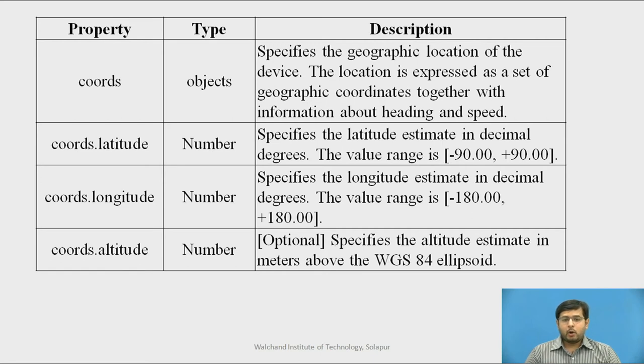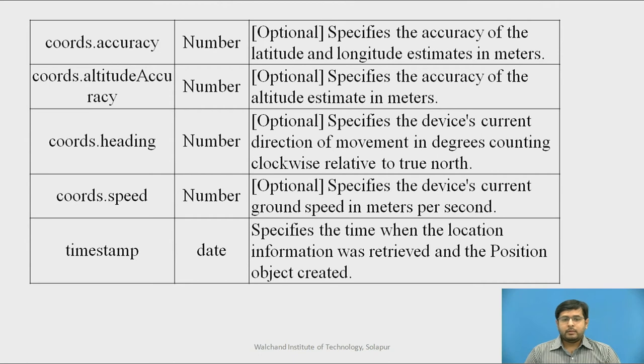We have coords altitude. This is optional. It specifies the altitude estimate in meters above the WGS 84 ellipsoid. Similarly, there is coords.accuracy, which is optional and specifies the accuracy of the latitude and longitude. Many times you might have seen that accuracy to 50 meters, accuracy to 10 meters and so on. coords altitude accuracy is also optional, specifies the accuracy of the altitude estimates in meters. coords heading specifies the device's current direction of movement in degree counting clockwise relative to the true north. coords speed specifies the ground speed in meters per second and the timestamp which specifies the time when the location information was retrieved and the position object was created.